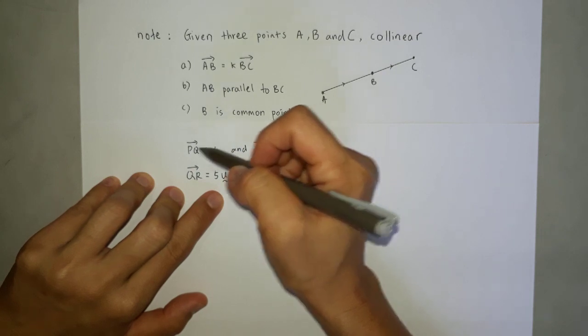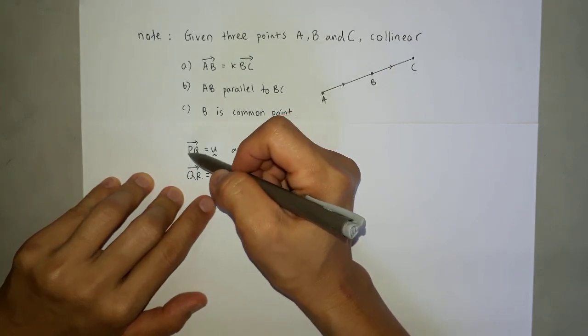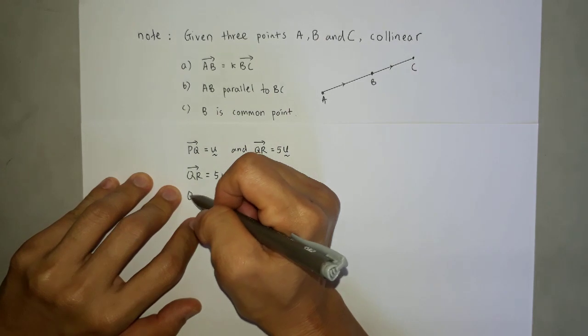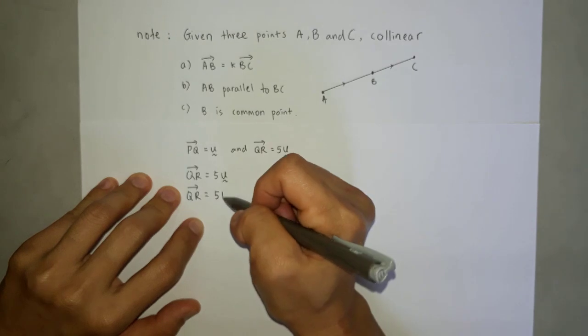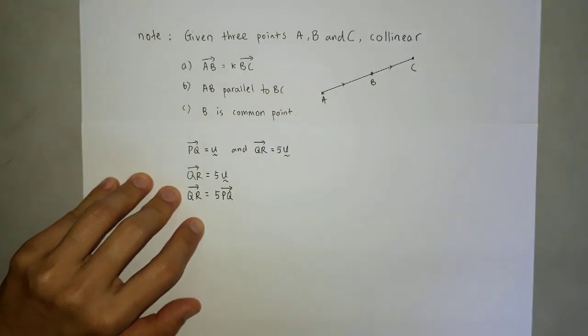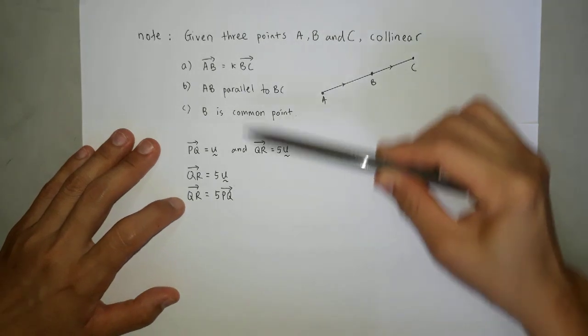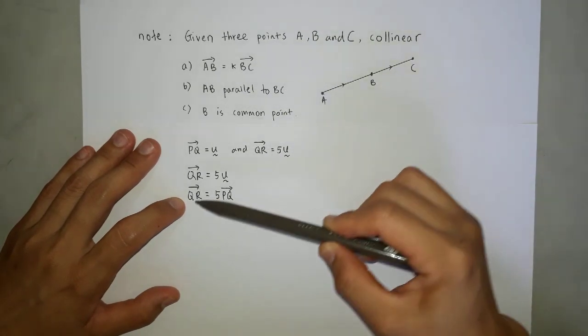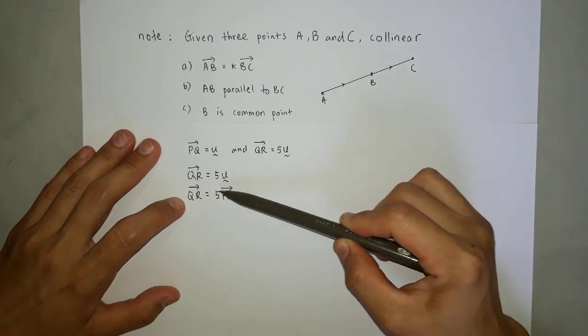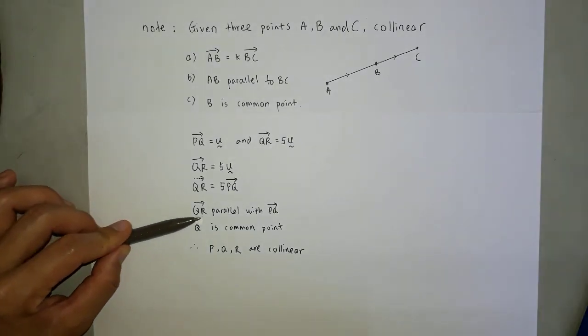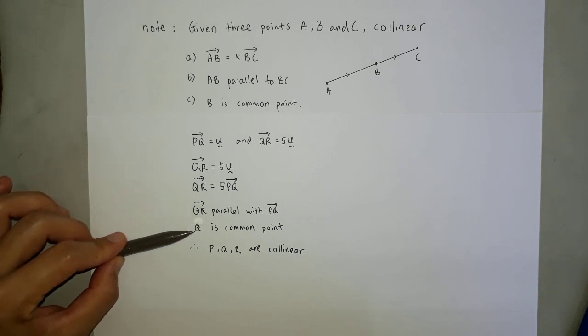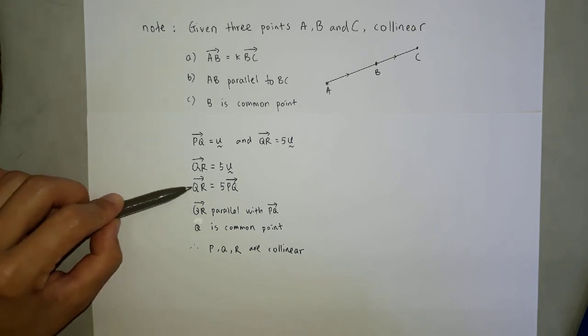U, vector U also equals to vector BQ. Right? So QR equals to 5U. So QR equals to 5BQ. With this, the first condition I have written where QR equals to 5BQ. 5 is the constant. So I write down vector QR parallel with vector BQ, and Q is common point because point Q appears here